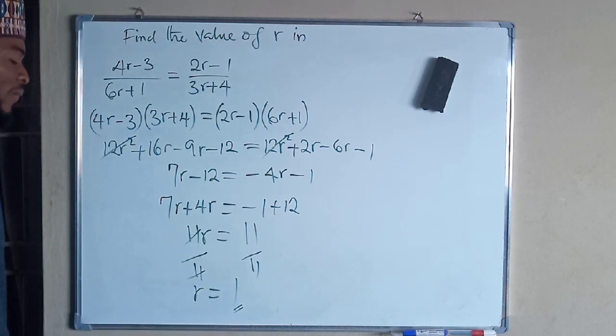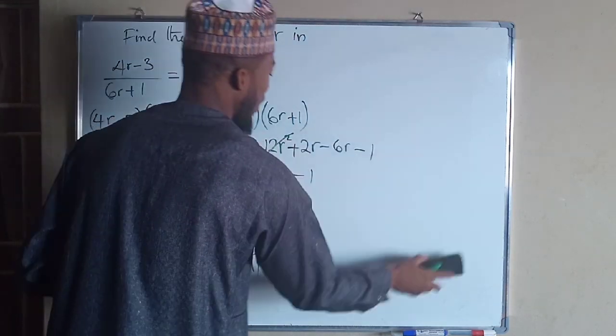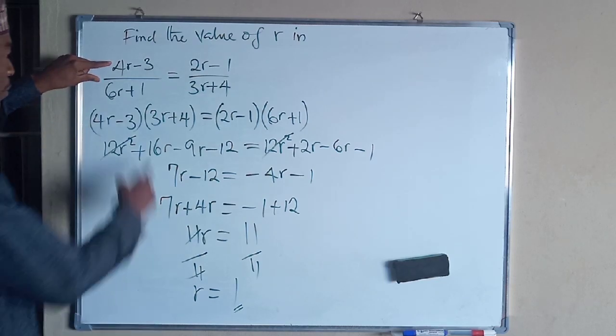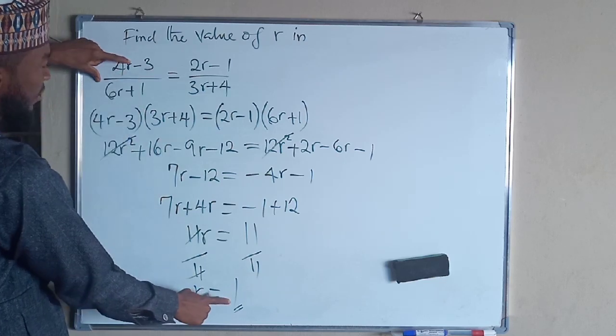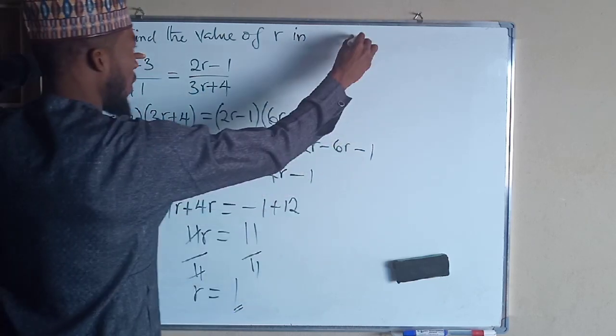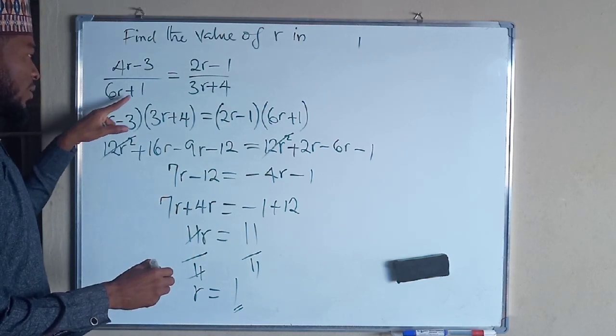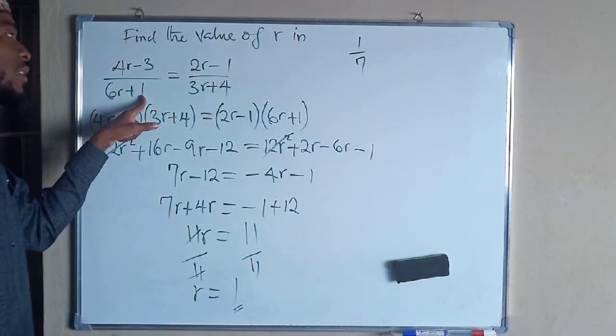You can put the value of R back into the equation to see whether left-hand side is equal to right-hand side. So let us test for this one. 4 times 1 is 4, minus 3 is 1. 6 times 1 is 6, plus 1 is 7. So we have 1 over 7 on the left-hand side.